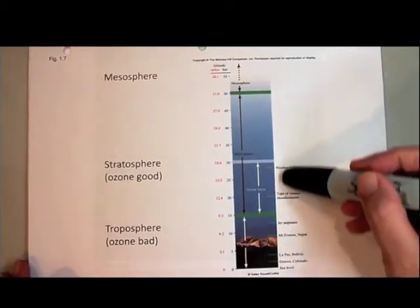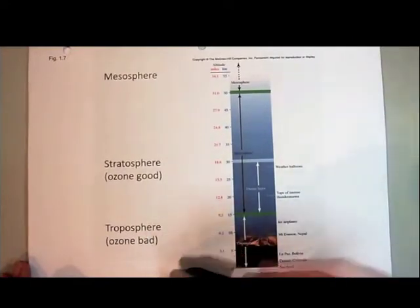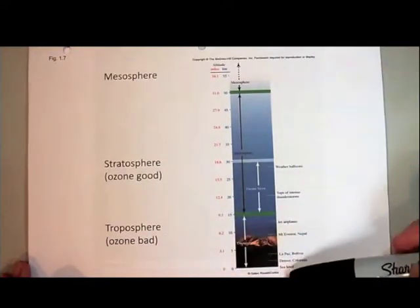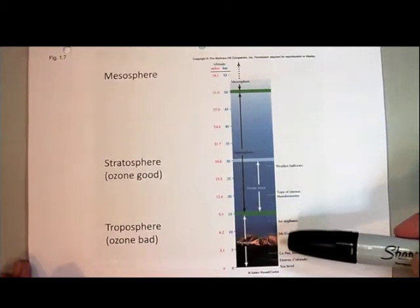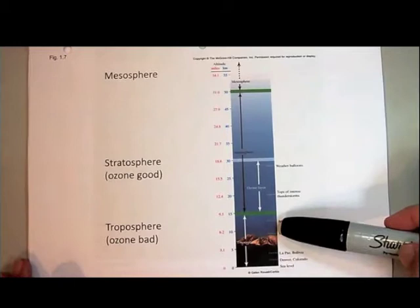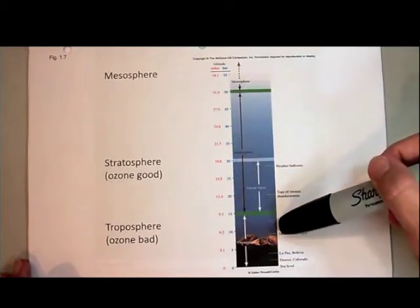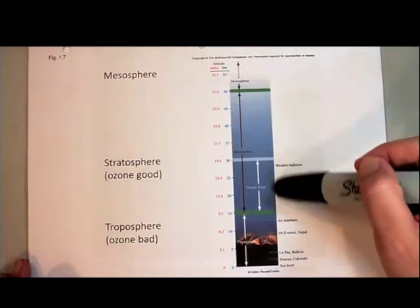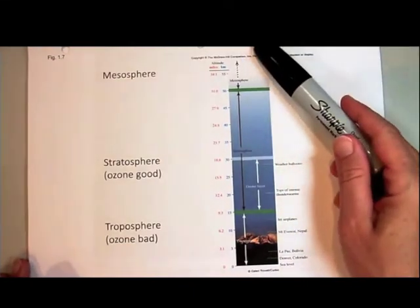The layer of the atmosphere that we live in is called the troposphere. The troposphere goes up about nine miles, well above the highest mountain. Then the next layer is called the stratosphere, which is about a 20-mile layer above the Earth. And above that even further is the mesosphere.